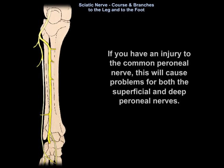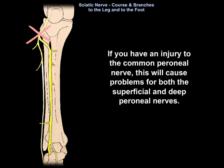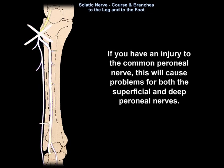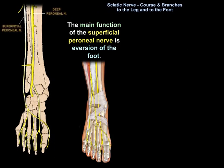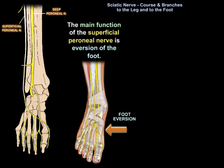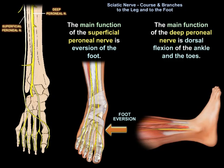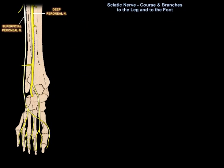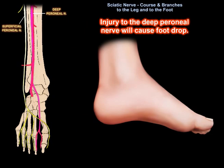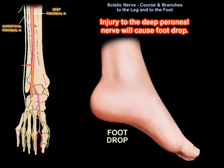If you have an injury to the common perineal nerve, you will cause problems for both the superficial perineal nerve and the deep perineal nerve. The superficial perineal nerve's main function is eversion of the foot. The deep perineal nerve's main function is dorsiflexion of the ankle and the toes. A deep perineal nerve injury will give a foot drop.